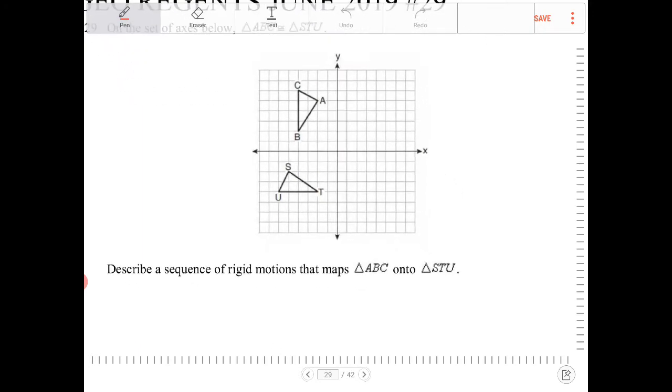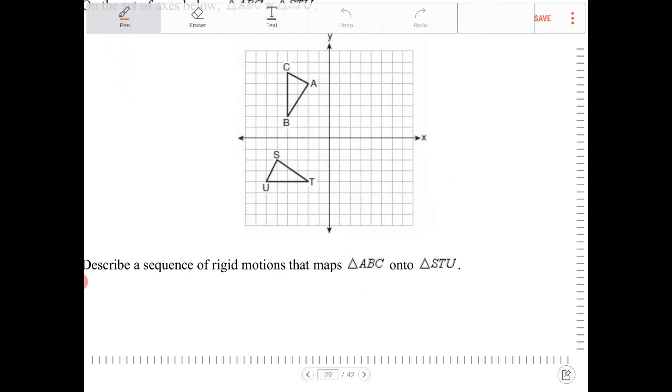So looking at this, just based on this description here, because they're both congruent, I know that angle A corresponds with S, B corresponds with T, and C corresponds with U.